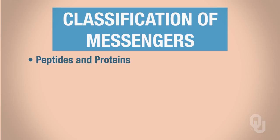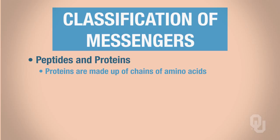Then we move on to the peptide and protein chemical class. You're already familiar with what a protein is — a chain of amino acids. This is going to be our most abundant type of ligand. When a peptide or protein is mentioned, think about how they are synthesized via transcription and translation, and how they can go from a pre-propeptide to a propeptide to a peptide in the various organelles we've already discussed.